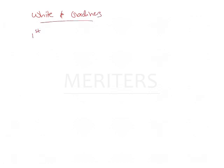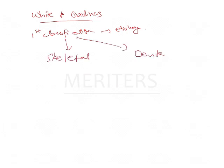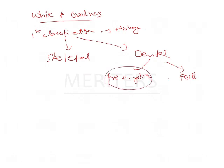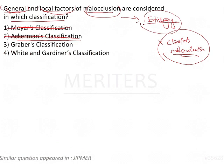Regarding White and Gardner's classification — this was almost the first type of classification given to classify etiological causes. They tried to make a distinction between skeletal causes and dental causes, and also between pre-eruptive and post-eruptive factors — that is, factors affecting before teeth have erupted versus after teeth have erupted. However, White and Gardner's also did not classify on the basis of general and local factors.